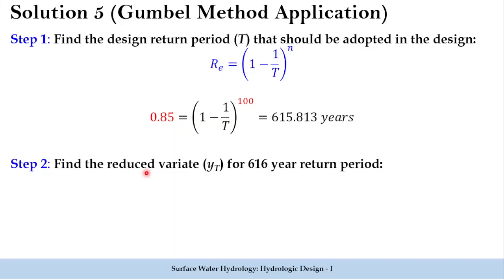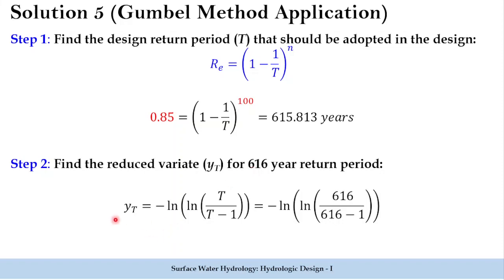In step two, we find the reduced variate yT for a 616-year return period using the standard equation: yT equals minus ln(ln(T divided by T minus 1)), where T is 616. Substituting 616 divided by 615 and solving, we get the reduced variate yT as 6.4224. This was a straightforward substitution of the return period into the equation.